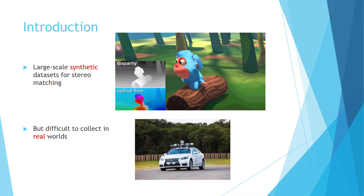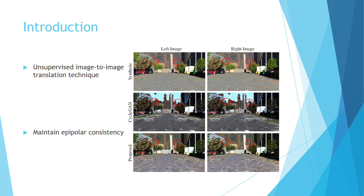There are many large-scale synthetic datasets for training stereo matching networks, but it is difficult to collect ground truth in real worlds. Our goal is to use unsupervised image-to-image translation techniques to translate synthetic images into real ones, while maintaining epipolar consistency.